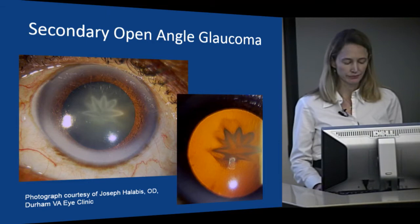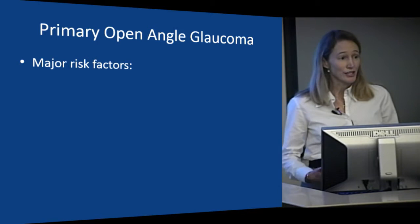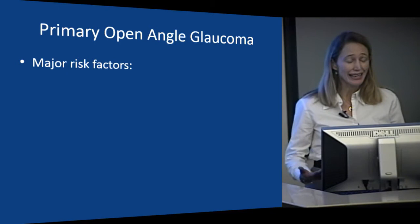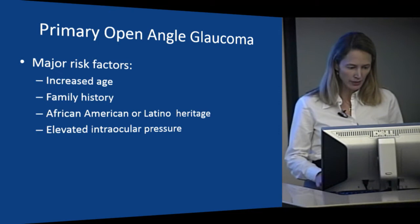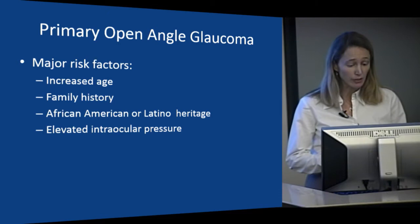Most of the time when we talk about glaucoma, most patients have primary open angle glaucoma — the angle looks open and there's no explanation for why it's happening other than their risk factors. Those risk factors include increased age, family history of glaucoma, African American or Latino heritage, and elevated intraocular pressure.